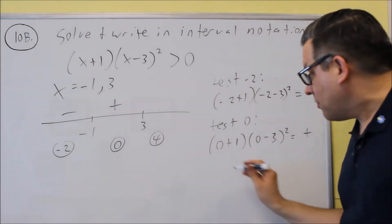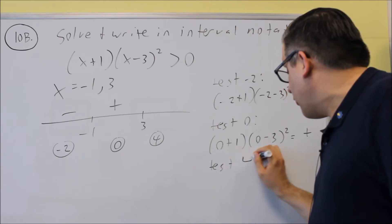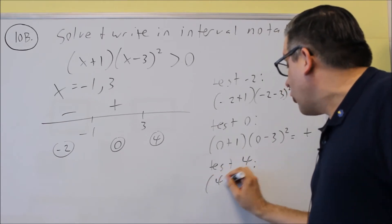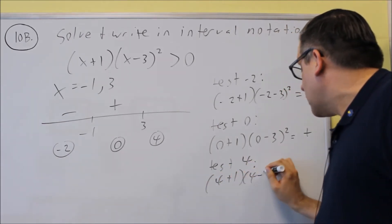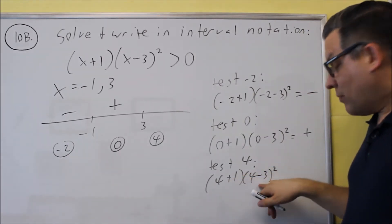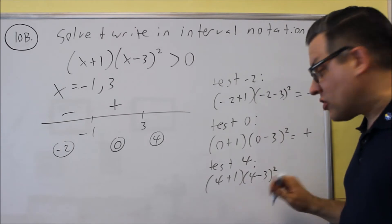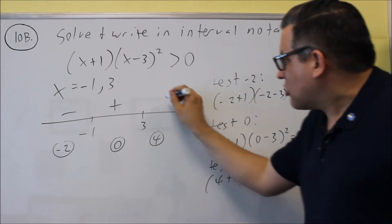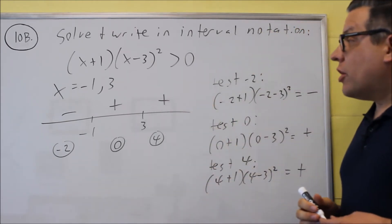Now I'm going to test four. So I have four plus one, four minus three squared. This is a positive number. This will be a positive number when you multiply those together. You still get a positive number as a result. So I get a plus right here.